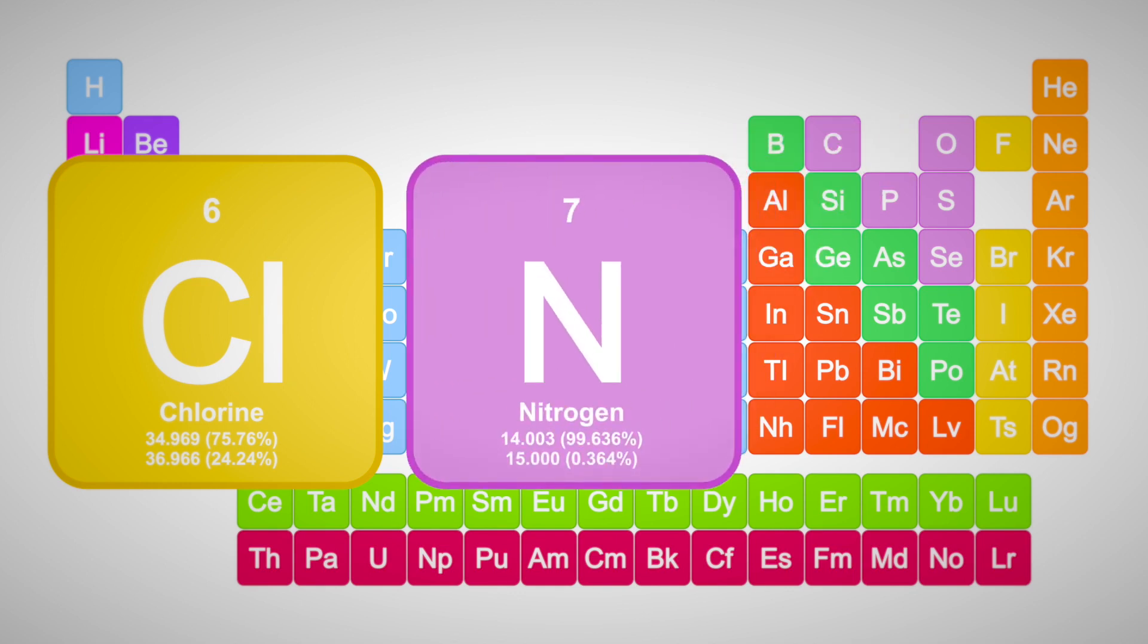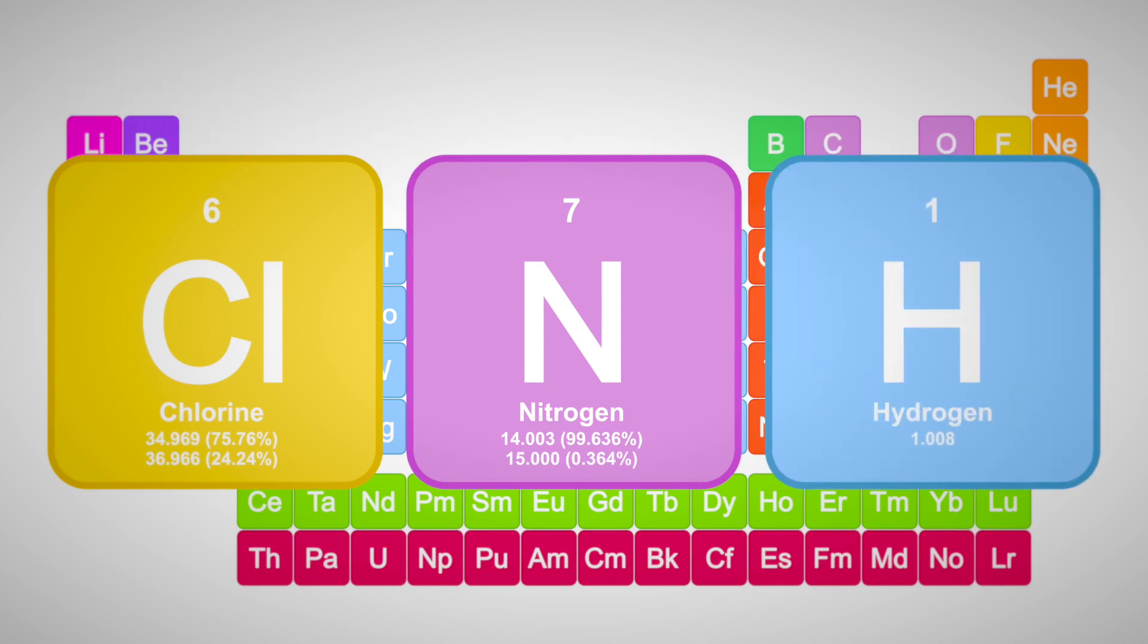Whereas 99.636% of nitrogen atoms are nitrogen-14 and only 0.364% are nitrogen-15. And for all intents and purposes, you can assume hydrogen contains only one isotope.